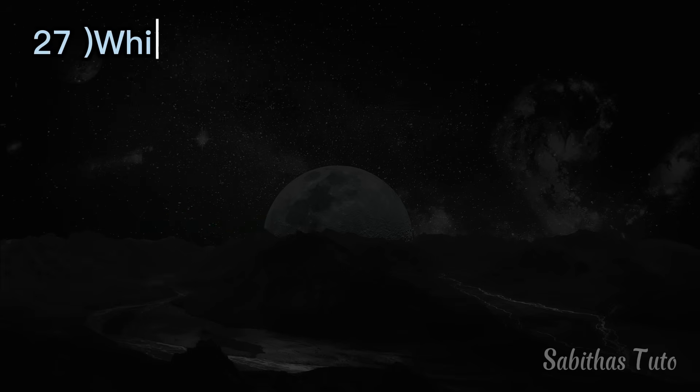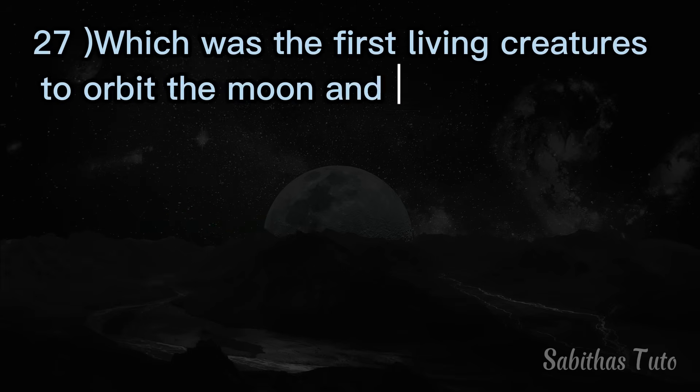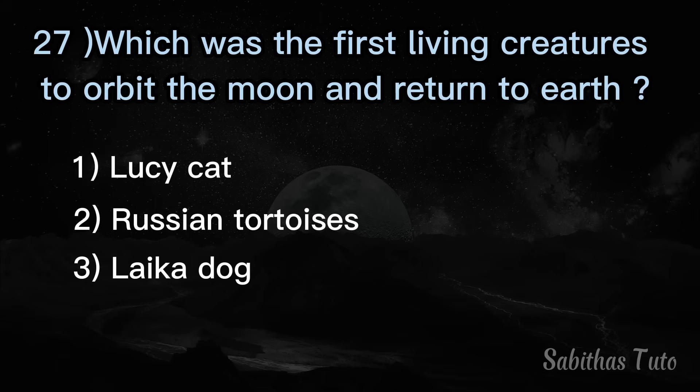Twenty-seventh question. Which were the first living creatures to orbit the moon and return to earth? The answer is Russian tortoises.